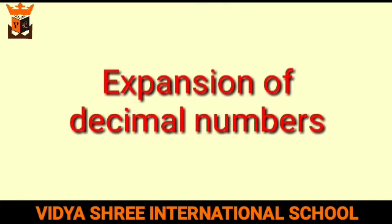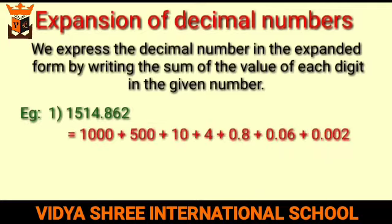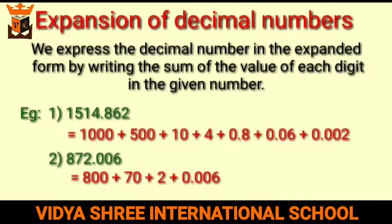Expansion of decimal numbers: we express a decimal number in expanded form by writing the sum of the values of each digit. For example, 1514.862 can be written as 1000 + 500 + 10 + 4 + 0.8 + 0.06 + 0.002. In the number 872.006, the expansion is 800 + 70 + 2 + 0.006. Here, 0 is in the tenths and hundredths place, so we do not write its place value as it is always 0.